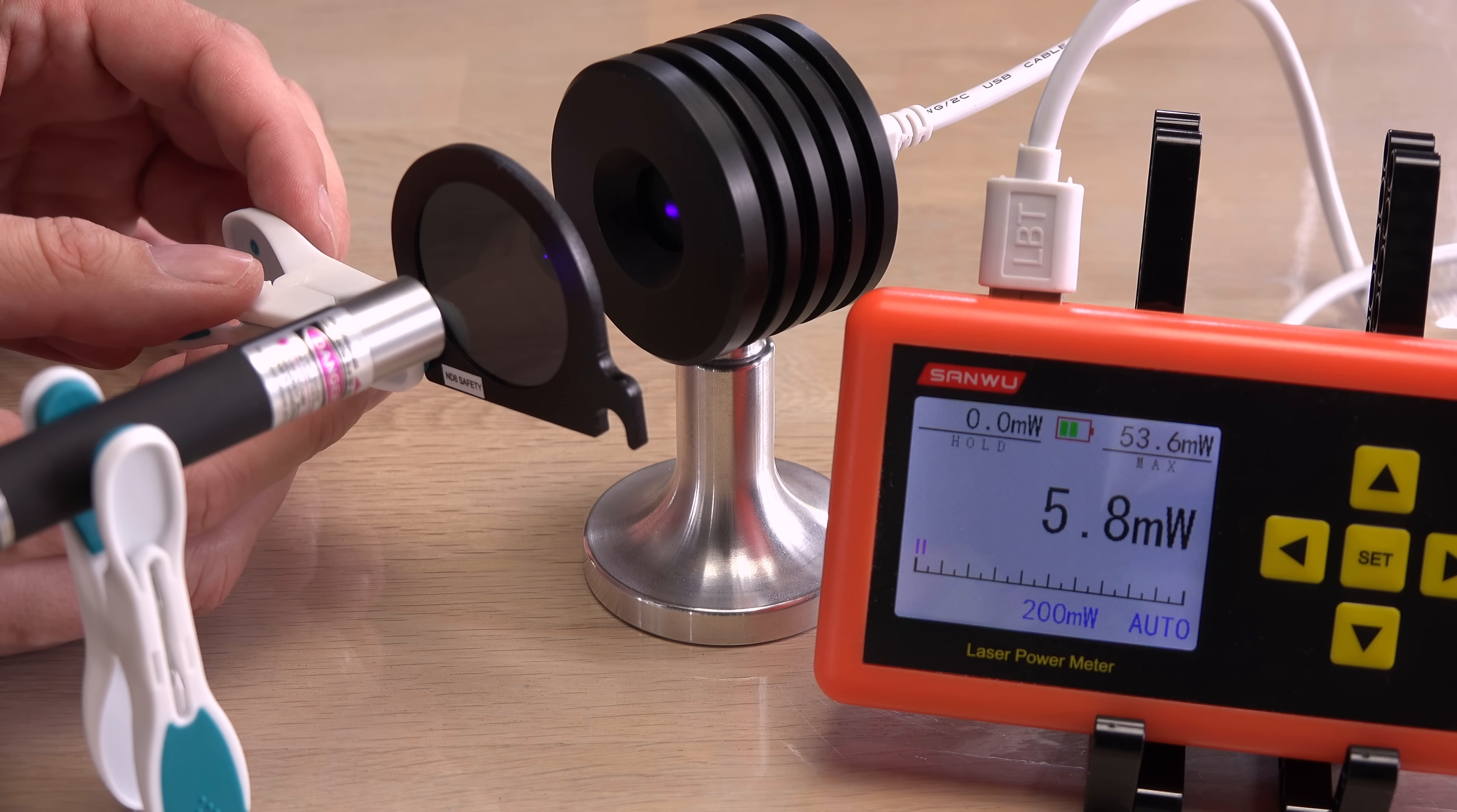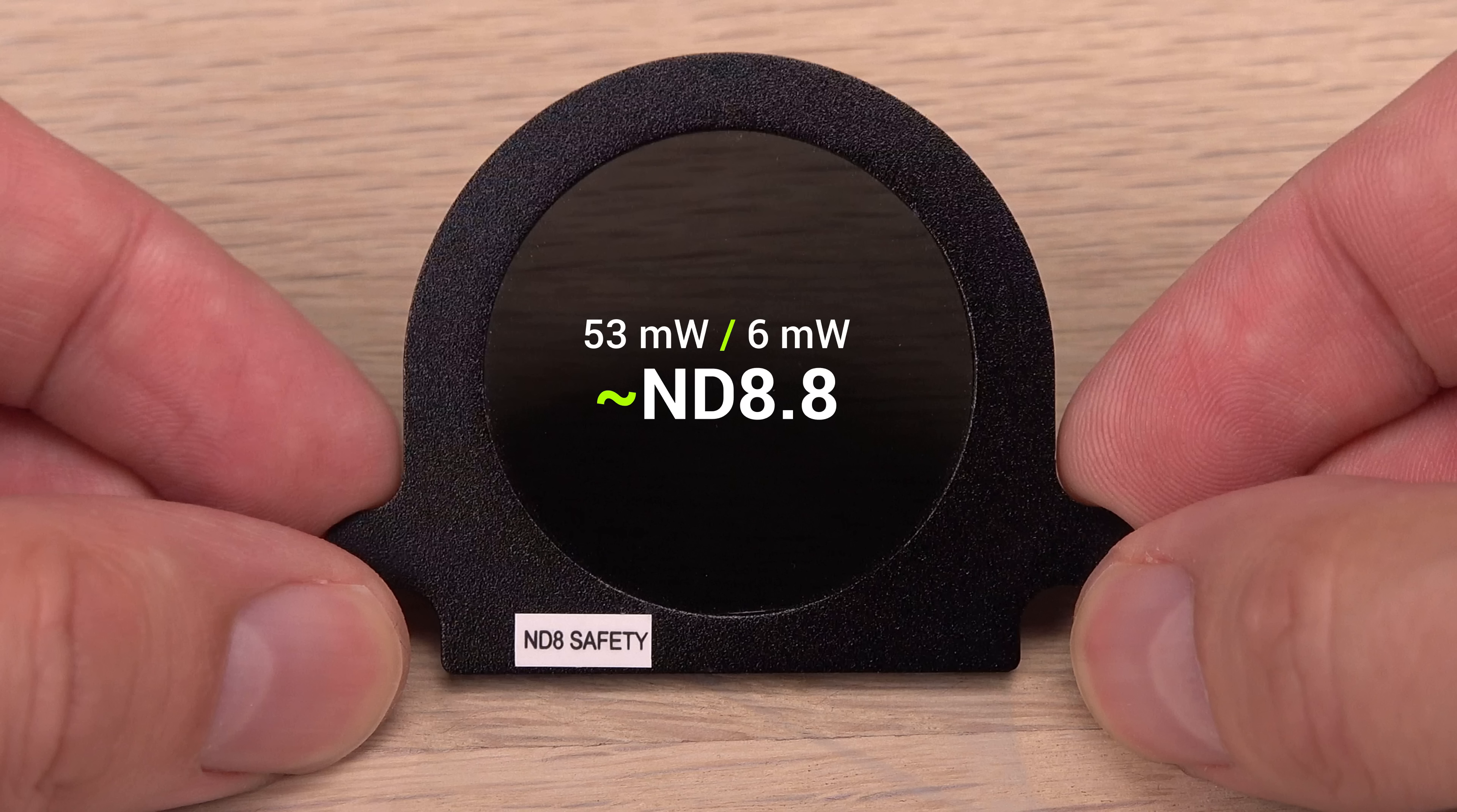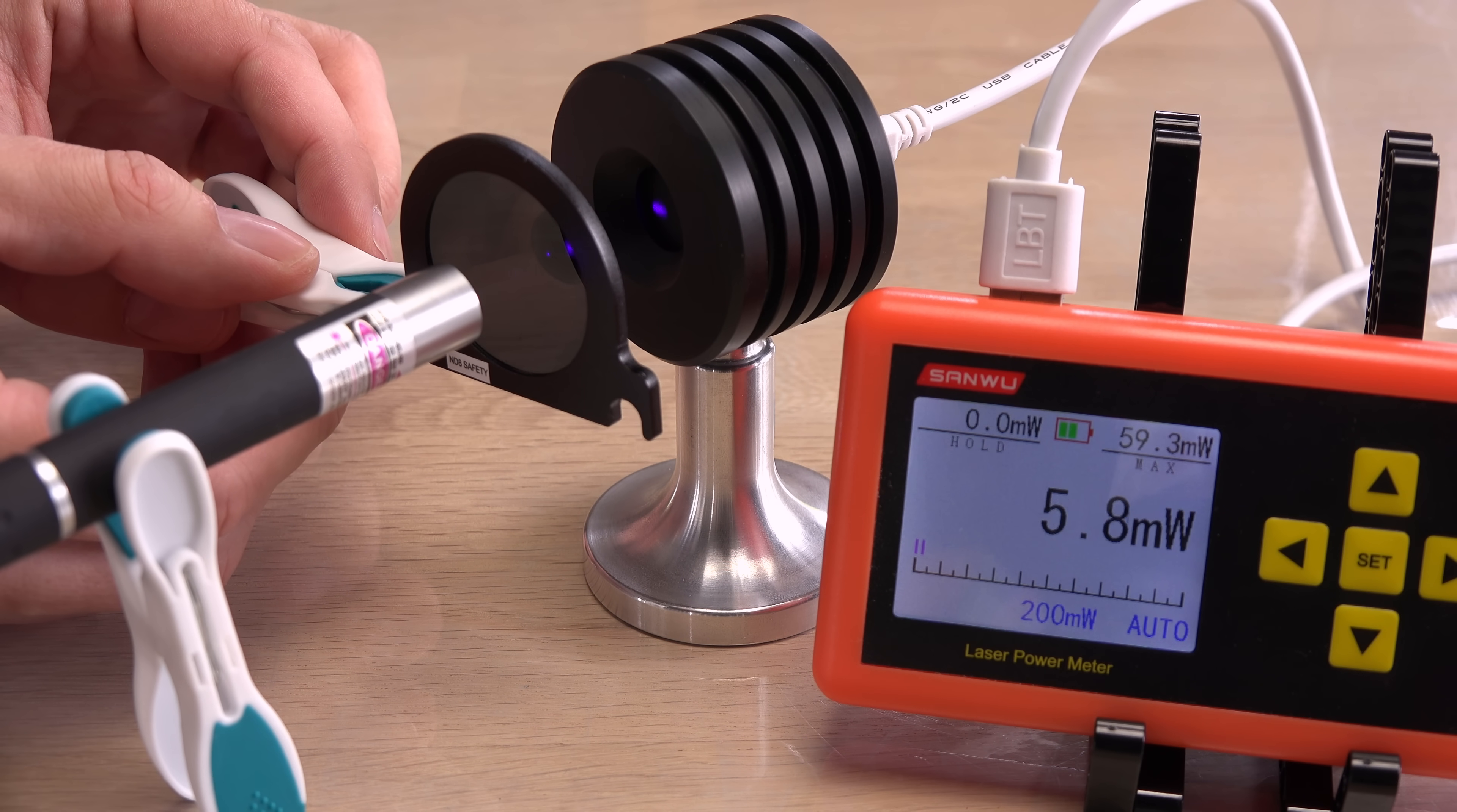After cooling off, the laser power meter shows that the beam is now only around 6 milliwatts, bordering the much safer class 3A and lower than expected. This drop in power equals close to ND9, a bit on the safe side for an ND8 filter. I don't mind that at all for a safety filter.